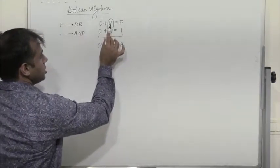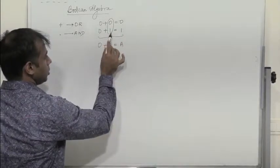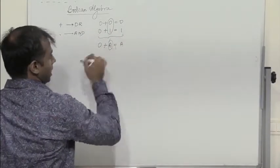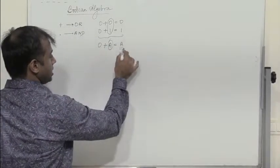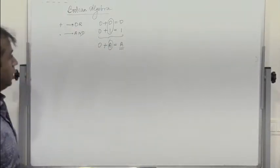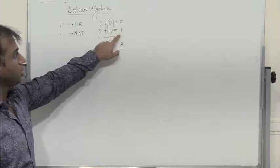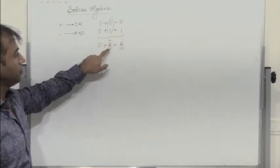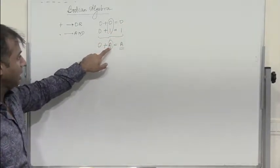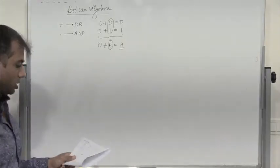If I add 0 with 0, I get 0. If I add 0 with 1, I get 1. So whatever A is, the output is A itself. If A is 0, output is 0. If A is 1, output is 1. So this is the OR operation: 0 plus A equals A.